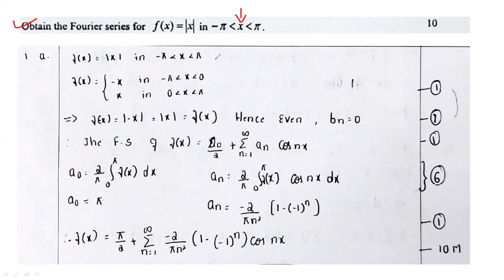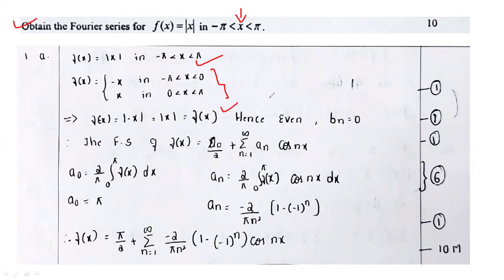First of all, it is desirable to define the function. The given function f(x) can be defined as: f(x) equal to minus x in the range minus pi less than x less than 0, and f(x) equal to plus x in the range 0 less than x less than pi. Now, f(x) of minus x equals modulus of minus x, which equals modulus of x, which equals f(x).